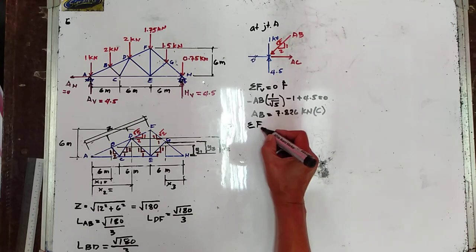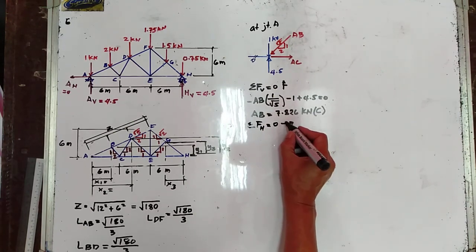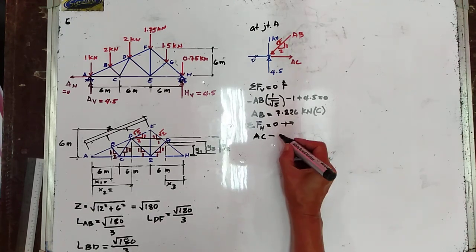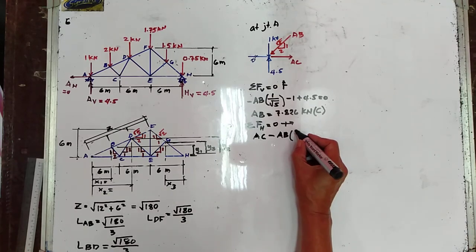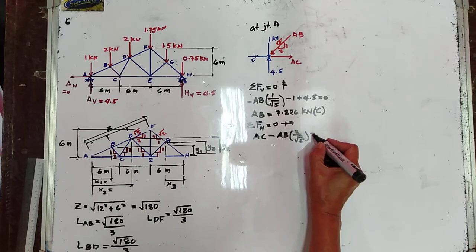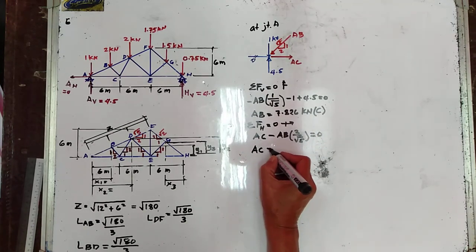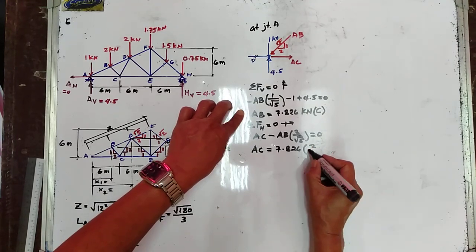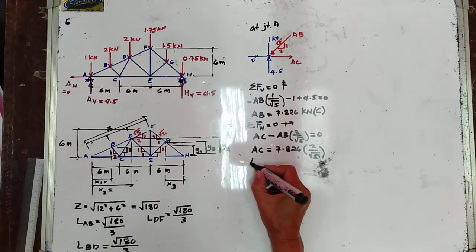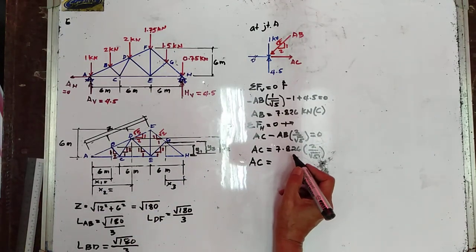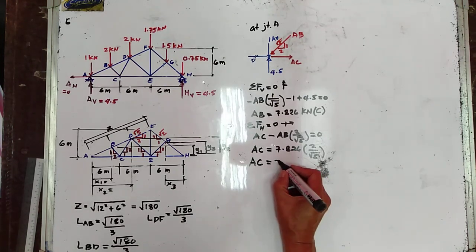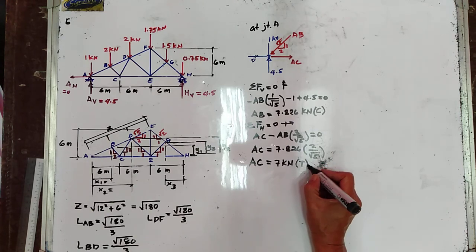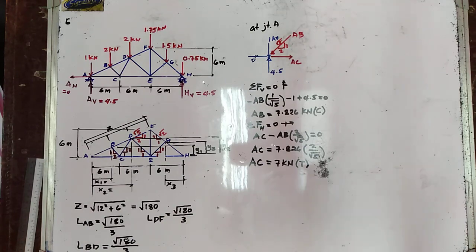Summation of forces horizontal equals 0, to the right positive: AC minus AB times 2 over the square root of 5 equals 0. So AC equals 7.826 times 2 over the square root of 5, which equals 7 kilonewtons. We get a positive value, so the assumed direction is correct and AC is in tension.